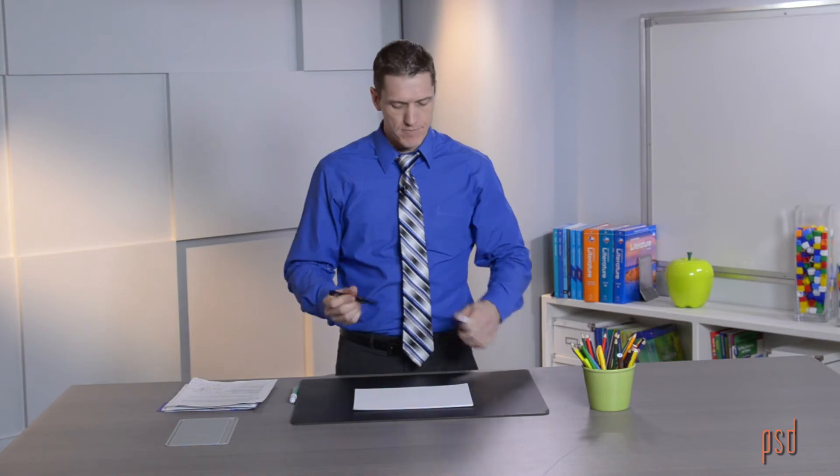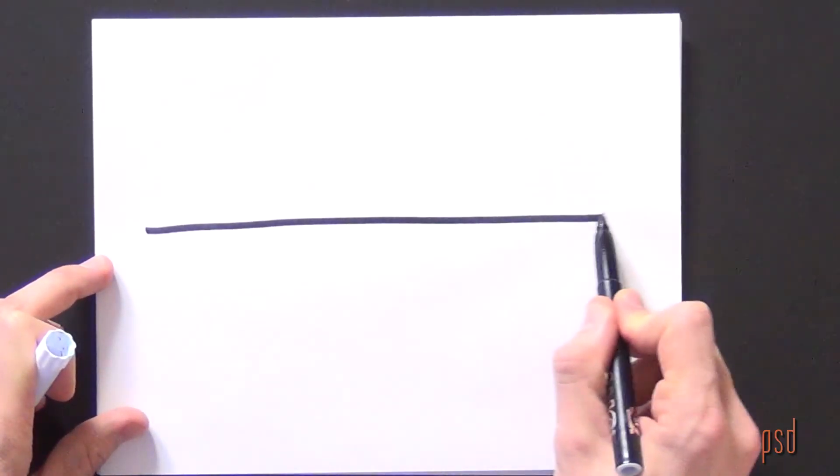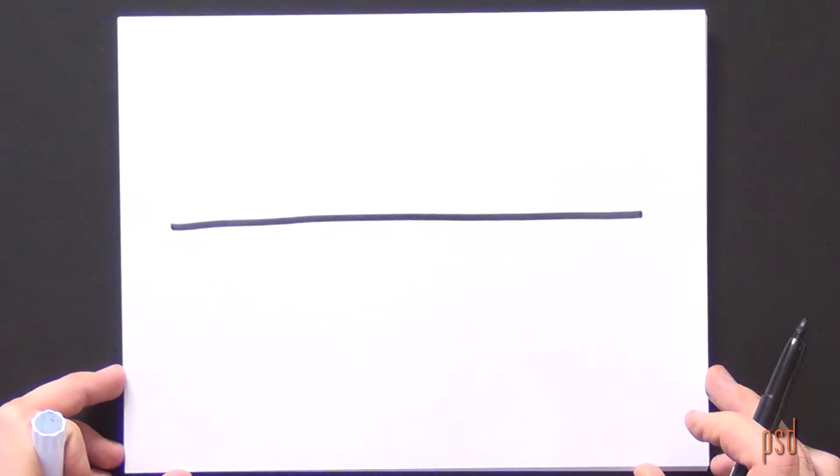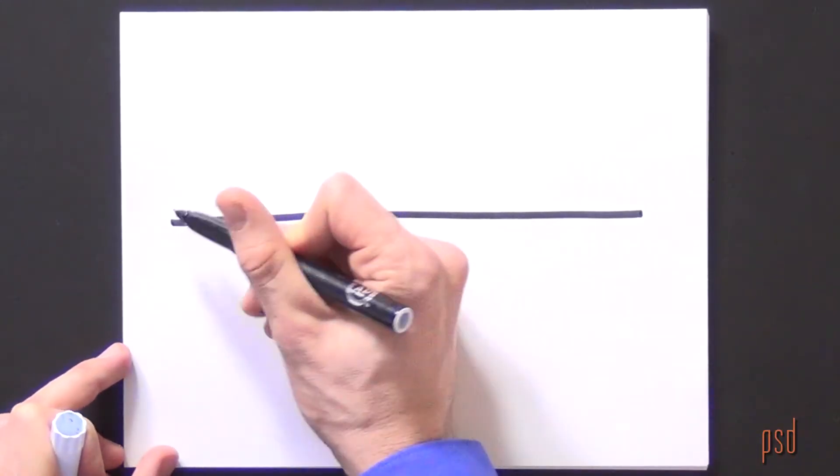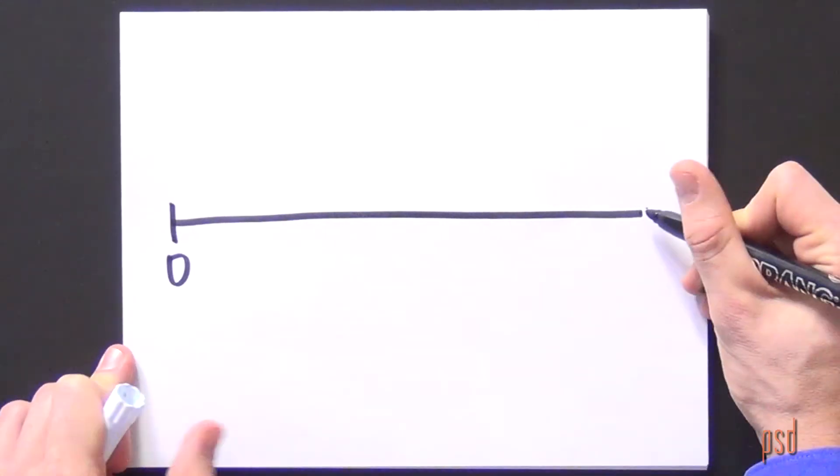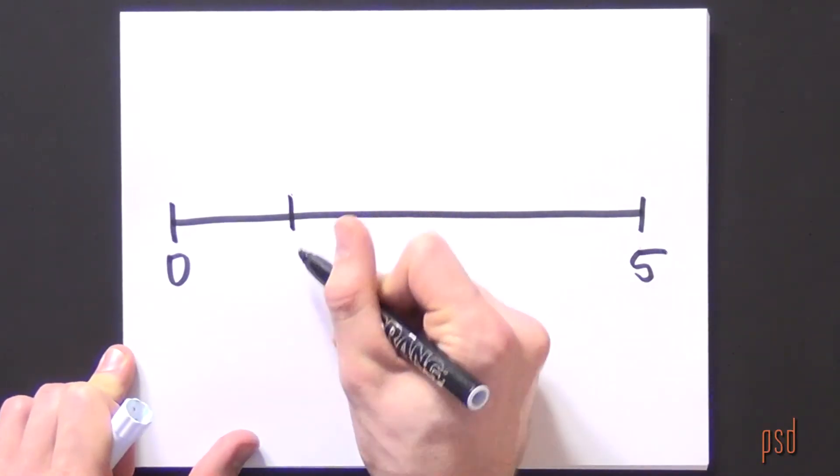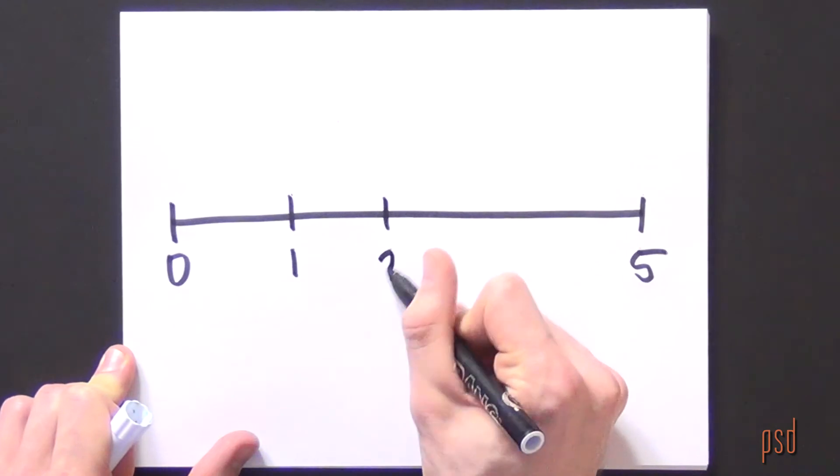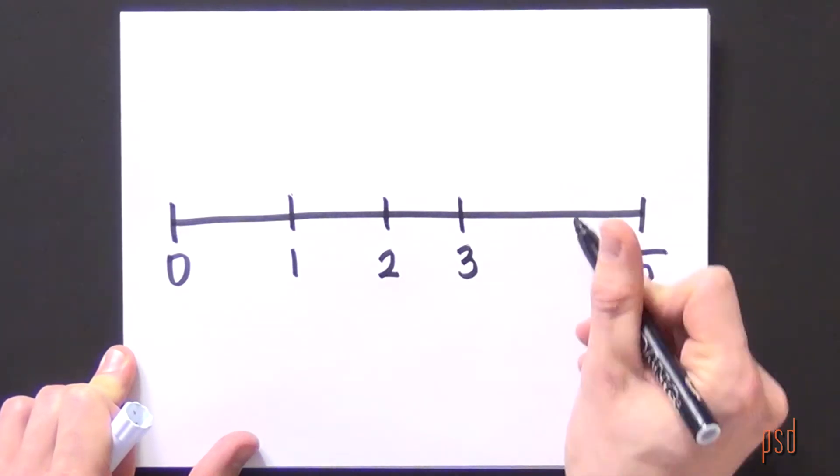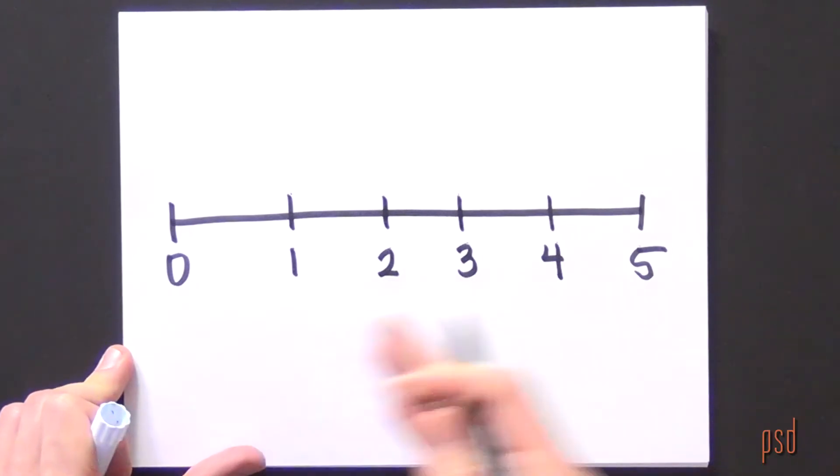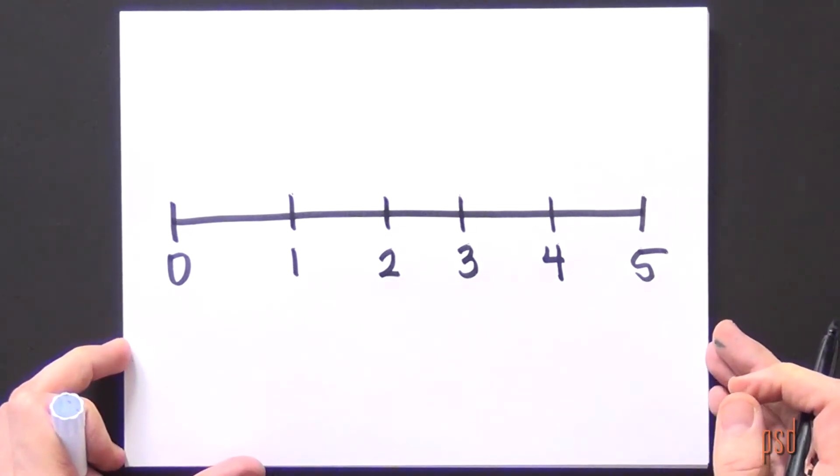I'm going to represent this problem using an open number line. I'll start by just drawing a line. I know that Tom has five feet of string so I can mark off zero and five, and I can go ahead and mark off one feet, two feet, three feet, four feet of string, and then five feet. This represents that he has five feet of string.